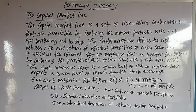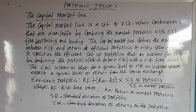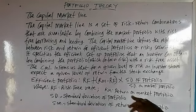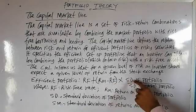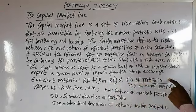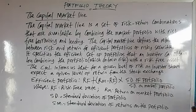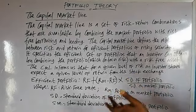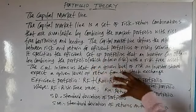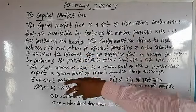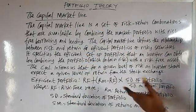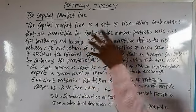How do you now determine and quantify the efficient portfolio? You use this formula for calculating the efficient portfolio: Rp = Rf + (Rm − Rf) × SD of the portfolio, where SD is the standard deviation of the portfolio under consideration. You analyze each portfolio you have combined using this formula to appraise each one.